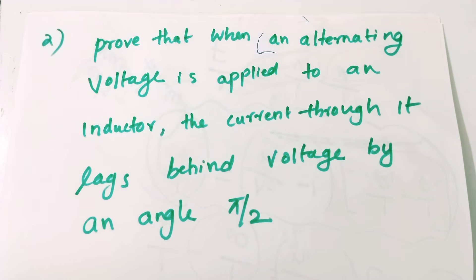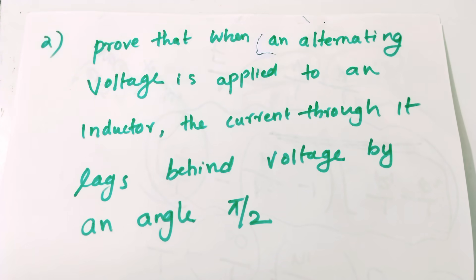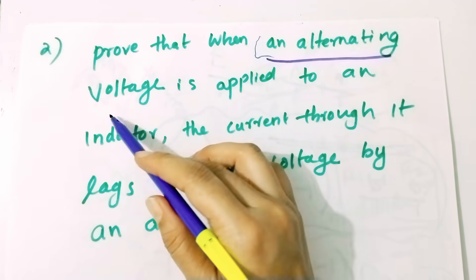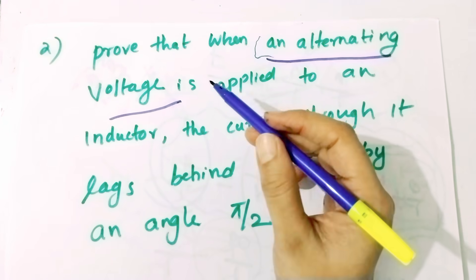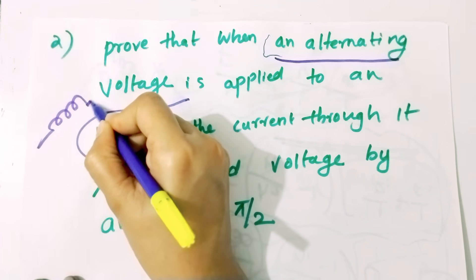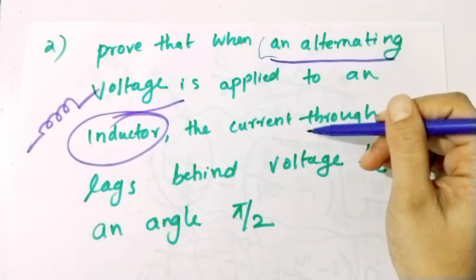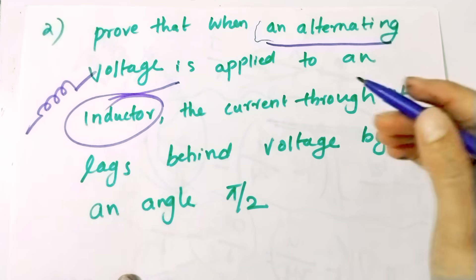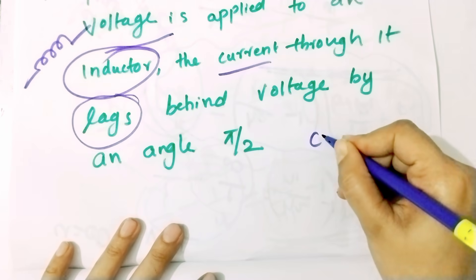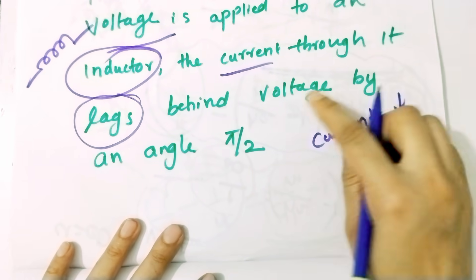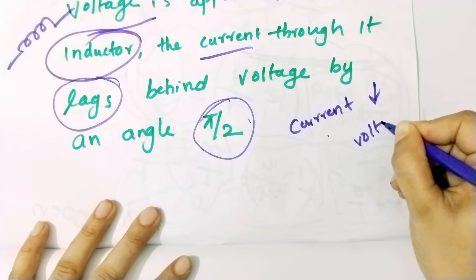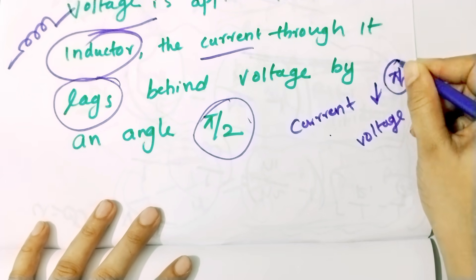The second derivation: prove that when an alternating voltage is applied to an inductor, the current through it lags behind the voltage by an angle pi by 2. Let's look at this proof. The current lags behind the voltage by an angle π/2.